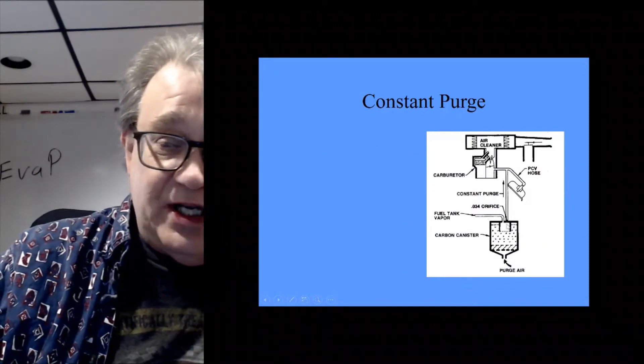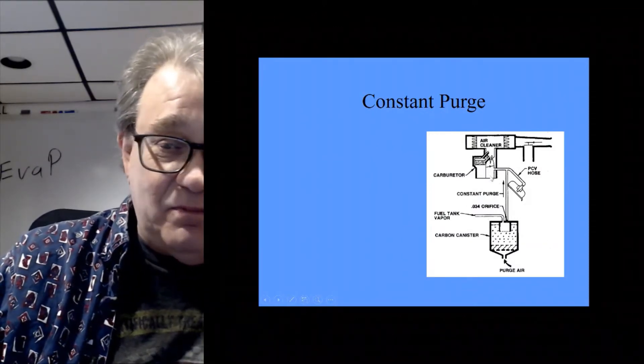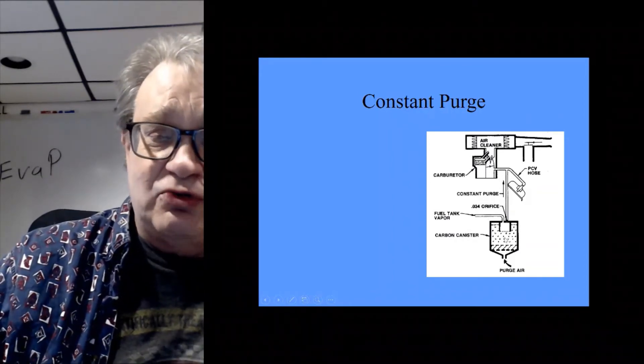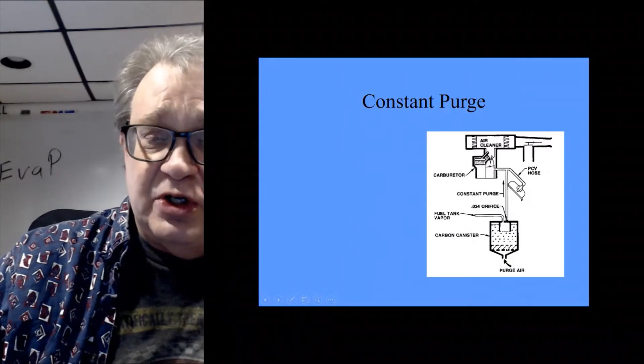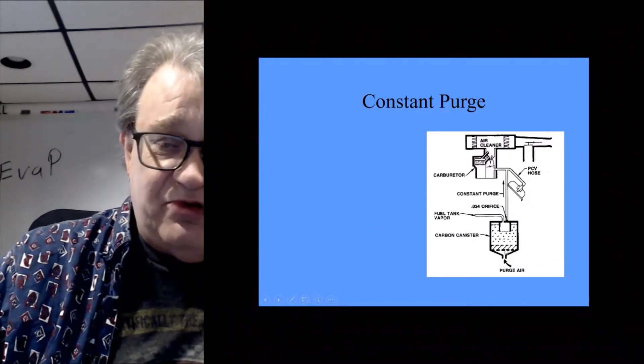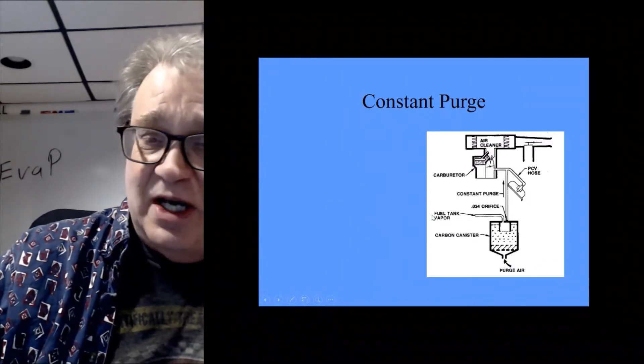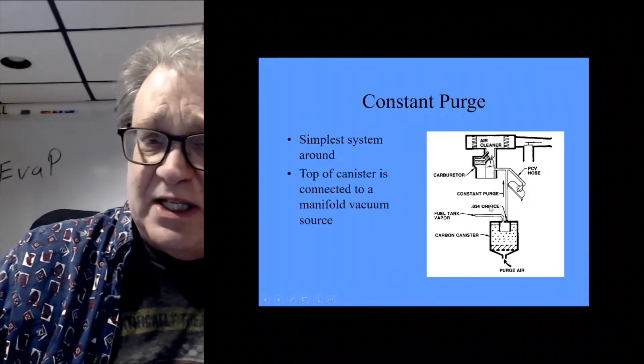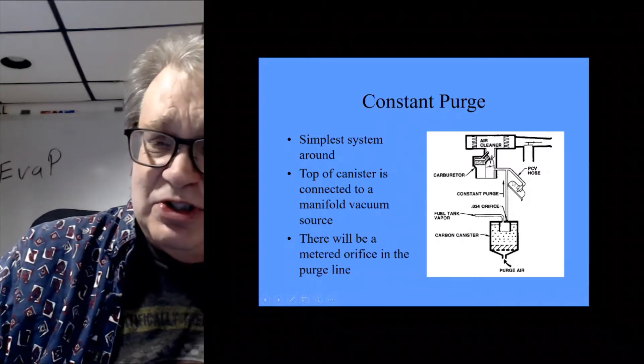Old school constant purge just constantly had manifold vacuum on it. There was a very small orifice that just constantly drew fresh air through this air inlet, through this vent on the bottom of the canister. Any vapors that were sloshed around and made were pushed up into the can. So this is just a straight metered orifice or a vacuum link basically.